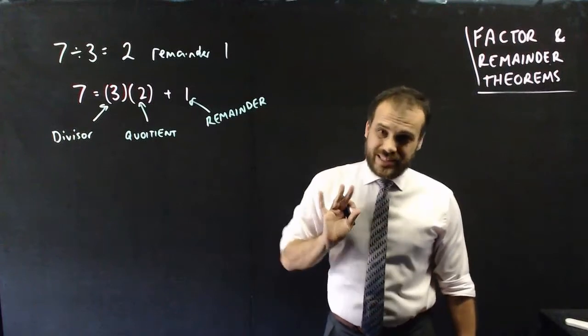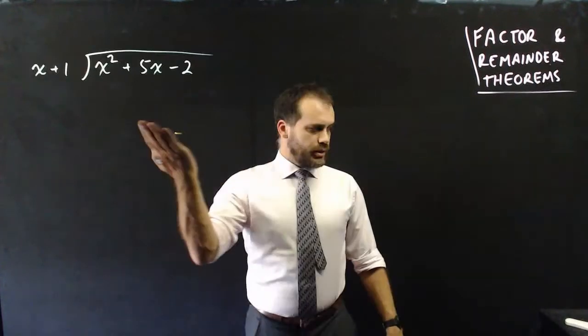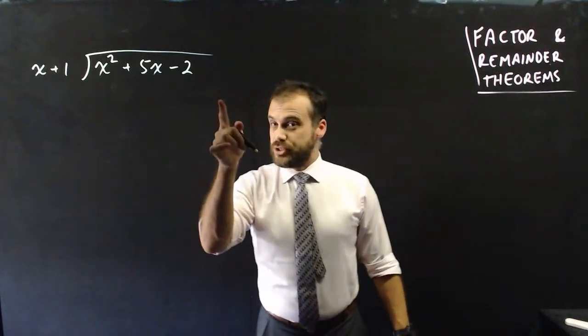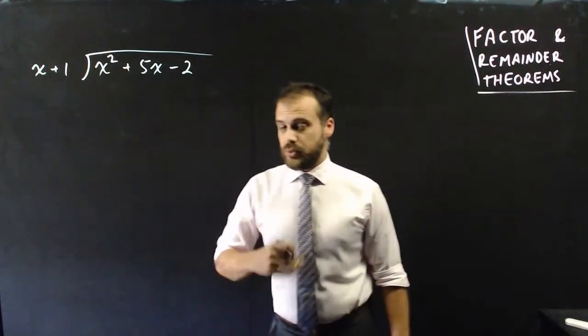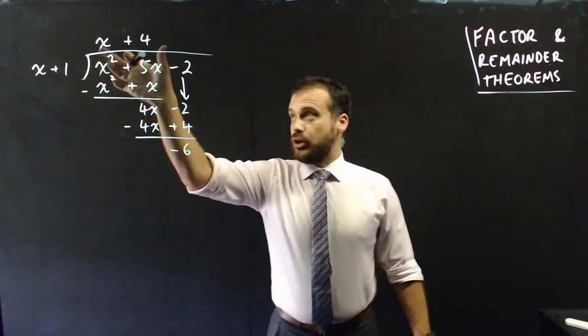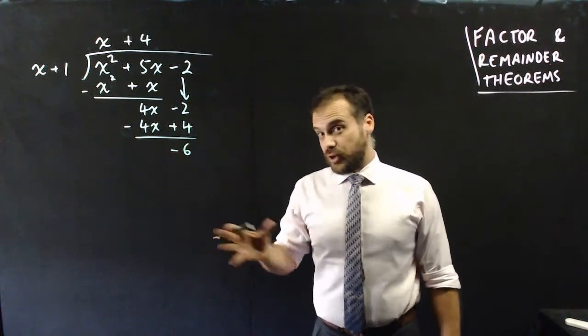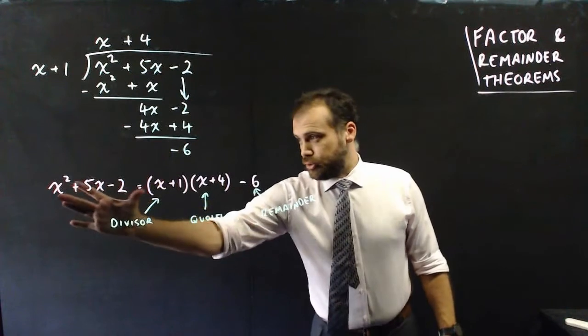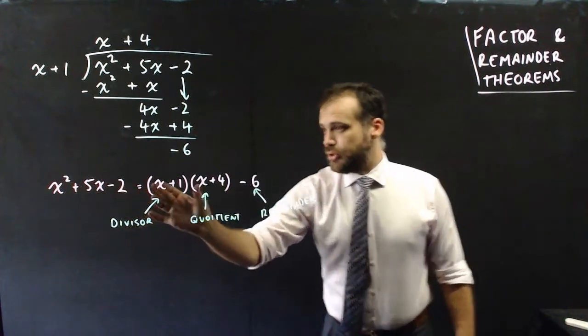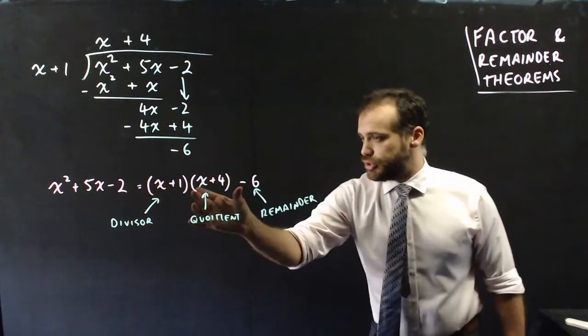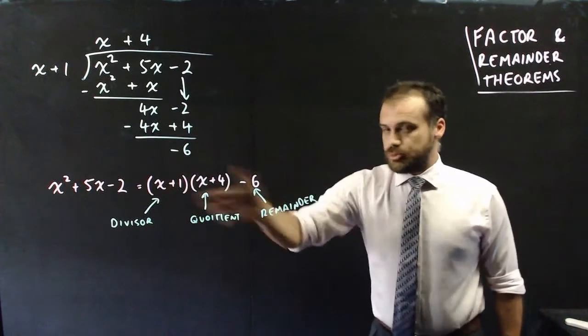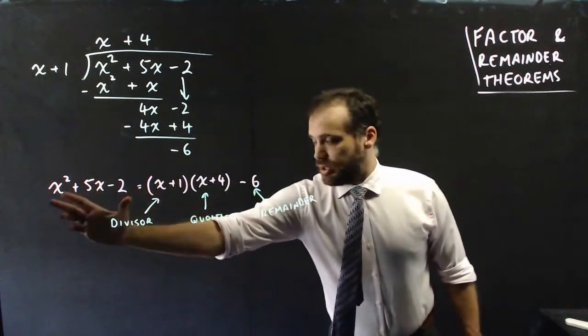So that's numbers. We can do exactly the same with polynomials. If I have polynomial x squared plus 5x minus 2 and I divide it by x plus 1, I'll get a quotient of x plus 4 and a remainder of negative 6. And I can express that in the following way. The polynomial we started with is equal to the divisor times the quotient minus 6. And you can expand that out and I promise you, you'll get this.